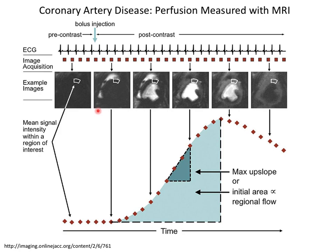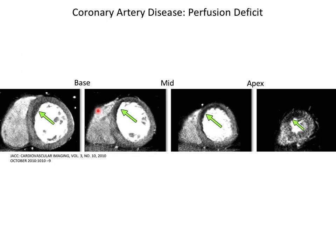The interesting thing about the heart is that at rest, baseline flow is about 1 mL per gram per minute through a chunk of tissue. When you exercise it goes up to about 5 — a 5x increase. That's why when you exercise, if flow only goes up to 2 because you have a stenosis, you feel it — the tissue is not getting the oxygen it demands. That's called ischemia.